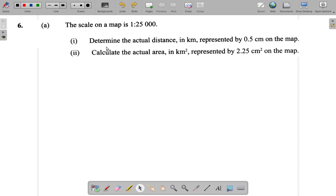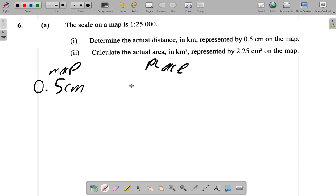Now, 0.5 centimetres. When you see 0.5 centimetres on the map, at the place it is actually 0.5 multiplied by 25,000. And 0.5 times 25,000 is 12,500. That's 12,500 centimetres, the actual distance.